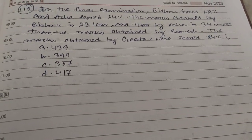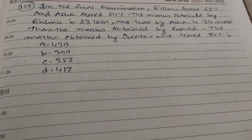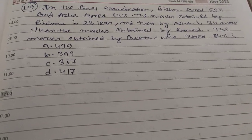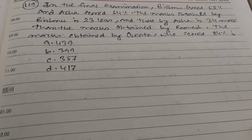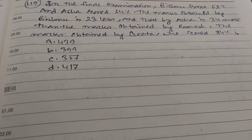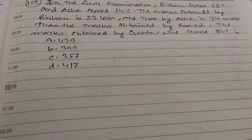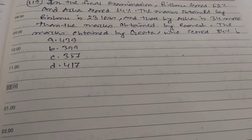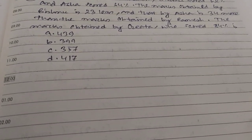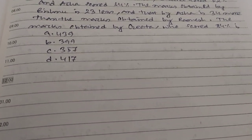Hi students, this is question number 119. In the final examination, Bishnu scored 52 percent and Asa scored 64 percent. The marks obtained by Bishnu is 23 less and that by Asa is 34 more than the marks obtained by Ramesh. So the marks obtained by Gita who scored 84 percent is...